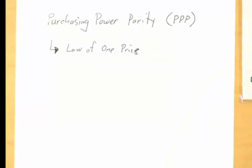The Economist magazine, about 20 to 30 years ago back in the mid-1980s or early 1990s, decided to teach their readers about purchasing power parity. They thought one way to do that would be to go around the world and collect price data on a product that is identical and sold in many different markets. They came up with the McDonald's Big Mac, which is sold everywhere in the world and is always identical — two all-beef patties, special sauce, lettuce, cheese, pickles, onions, and a sesame seed bun.